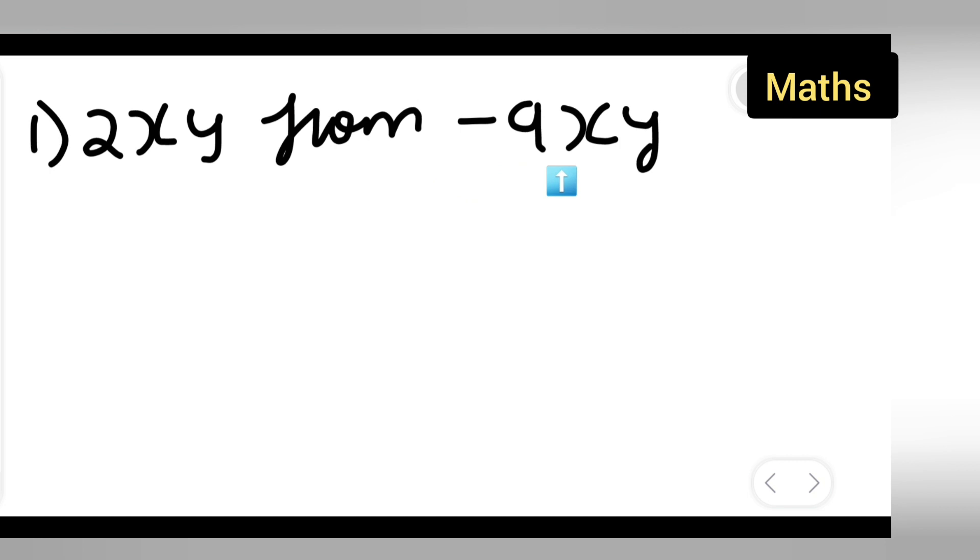First thing, you are going to write this term first: -9xy. So -9xy minus what? You are supposed to write down 2xy. You'll have to write minus because you are subtracting this from -9xy.